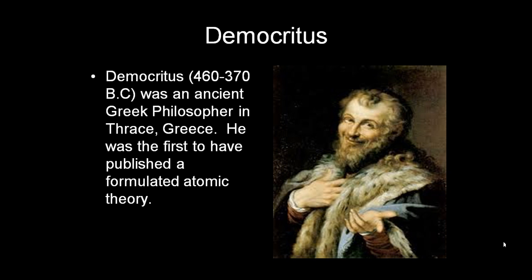Democritus was a very famous Greek philosopher. He was also very curious about what it was that made everything up. He began studying this thing, and he wasn't sure what it was. But after all of his studies, he created an atomic theory, and he was the first person to have published this type of work.